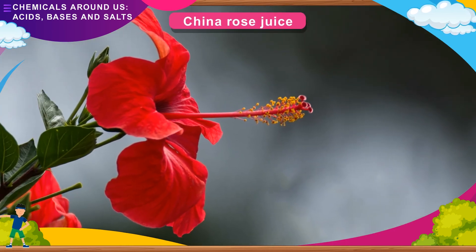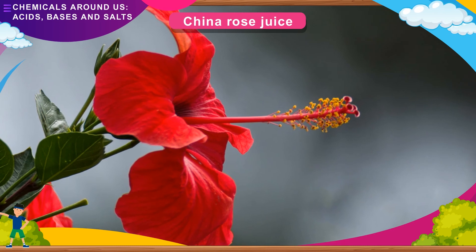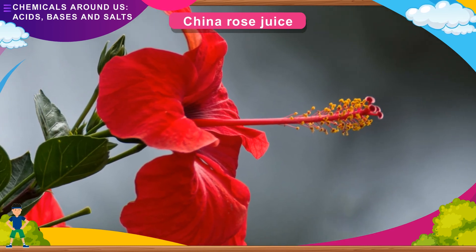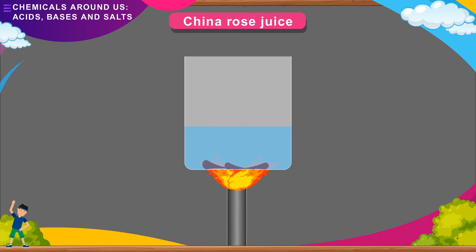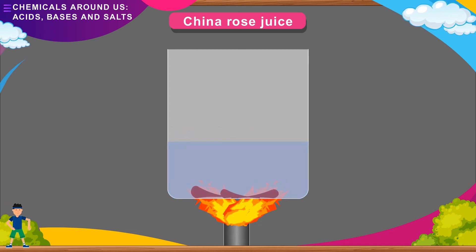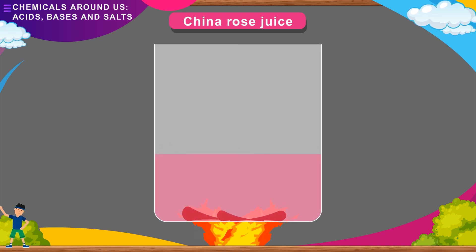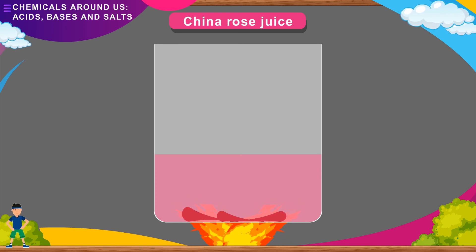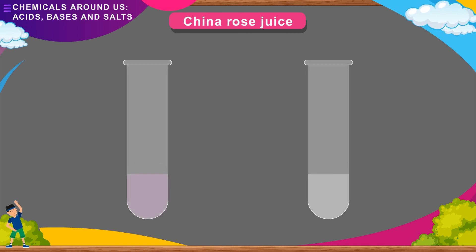China rose is another natural indicator. It turns green in a basic medium and magenta in an acidic solution. To make China rose indicator: collect some China rose petals, place them in a beaker containing water, and heat the beaker until the water becomes warm. Keep the mixture for some time until the water becomes colored. This colored water can now be used as an indicator — it turns acidic solutions dark pink and basic solutions green.